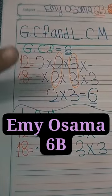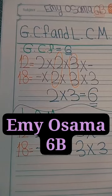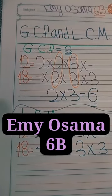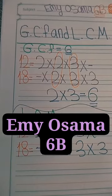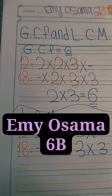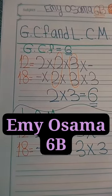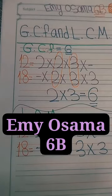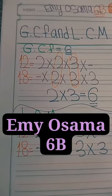Here I have two digits, 12 and 18. So, we are going to get the factors of 12 and 18. The factors of 12 are 2 and 2 and 3. We can choose 4 and 3, or 6 and 2 — all these are up to you. But I prefer to find the prime numbers to help find the common factors easily.